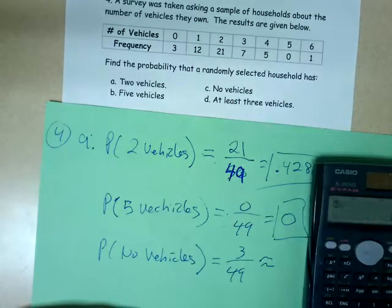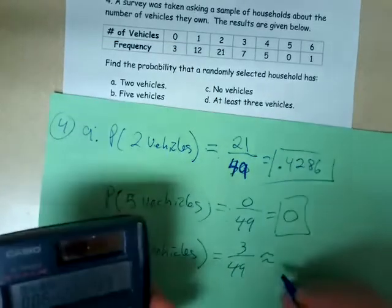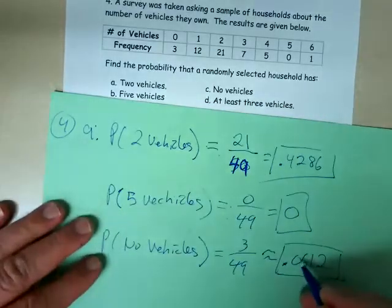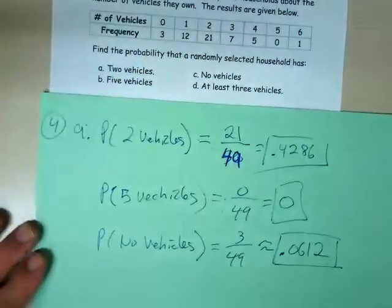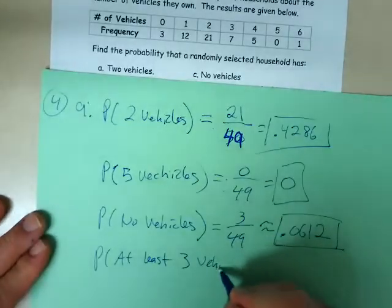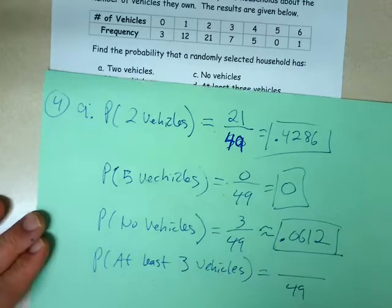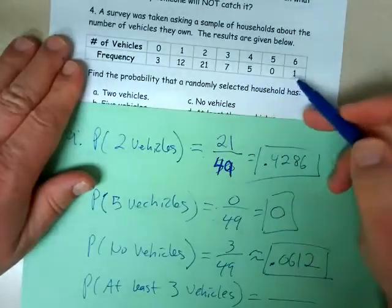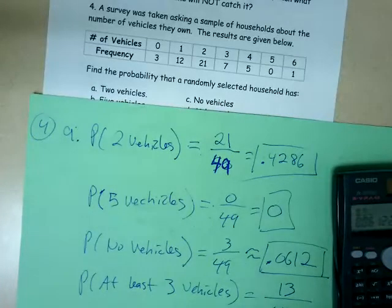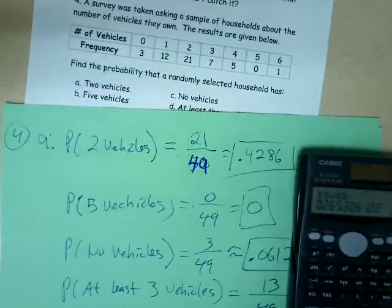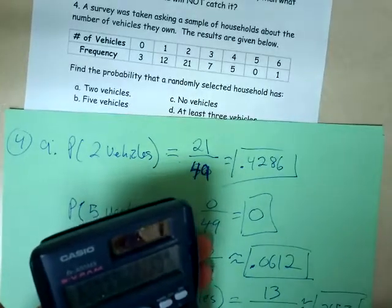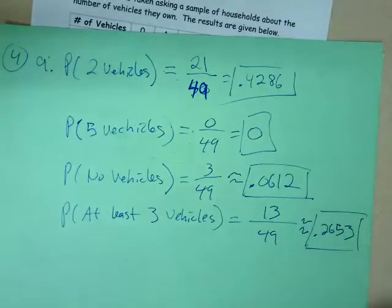Three divided by 49 gives approximately 0.0612. Finally, what's the probability of at least three vehicles? The number of vehicles must be greater than or equal to three. I add 7, 5, 0, and 1 together to get 13. So 13 out of 49 households have at least three vehicles, and 13 divided by 49 gives approximately 0.2653.